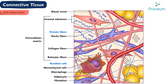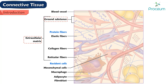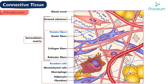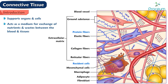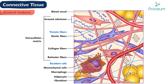It connects other tissues. Connective tissue is formed primarily of extracellular matrix, consisting of ground substance and fibers in which various connective tissue cells are embedded. It supports organs and cells, acts as a medium for exchange of nutrients and wastes between the blood and tissues, protects against microorganisms, repairs damaged tissues, and stores fat.